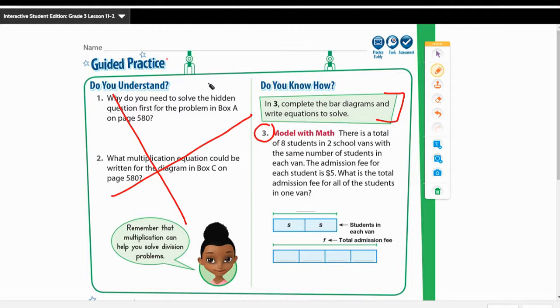There is a total of eight students in two school vans with the same number of students in each van. The admission fee for each student is $5. What is the total admission fee for all students in one van? Don't get too caught up on looking for both vans. We're looking for one van. So the first thing that we're going to do is we need to figure out what number goes on top here, and then we're going to figure out our equation as well.